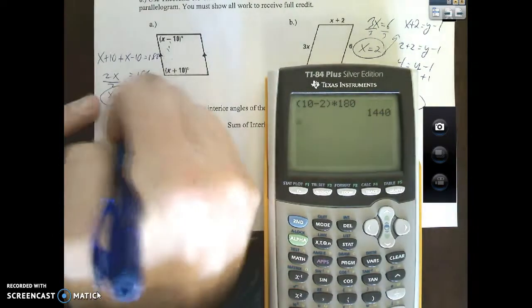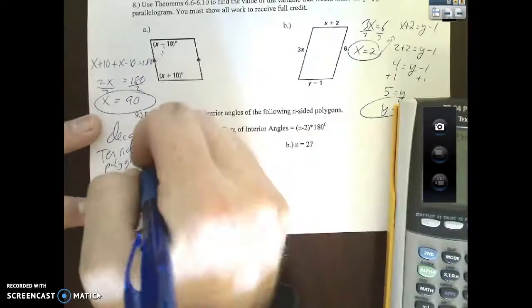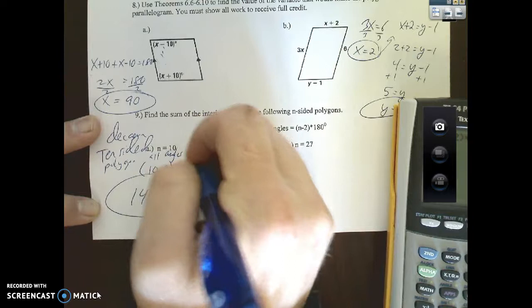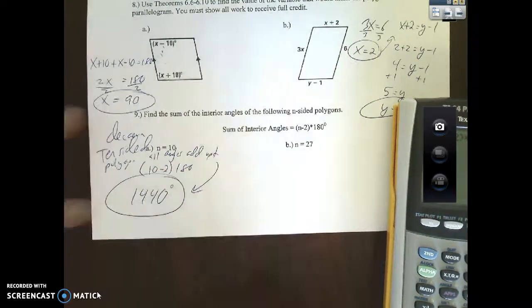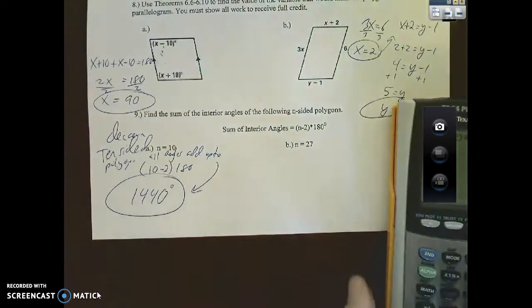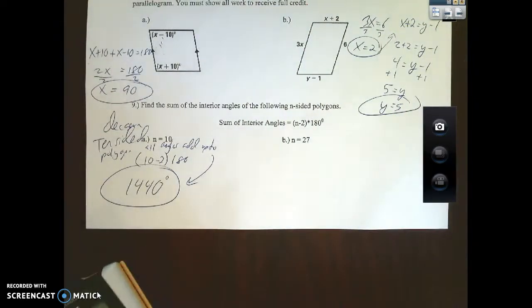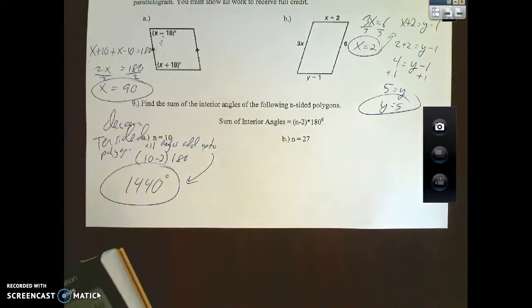That means that for a 10-sided polygon, or a decagon, all angles add up to 1440 degrees. Remember that pattern we talked about in class: plus 180, plus 180, plus 180.